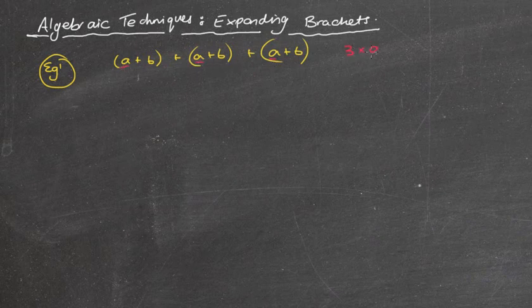So basically you're saying there's 3 lots of a's, 1, 6, 2, 6, 3, 6 plus 3 lots of 6's, which then simplifies to being 3a plus 18.